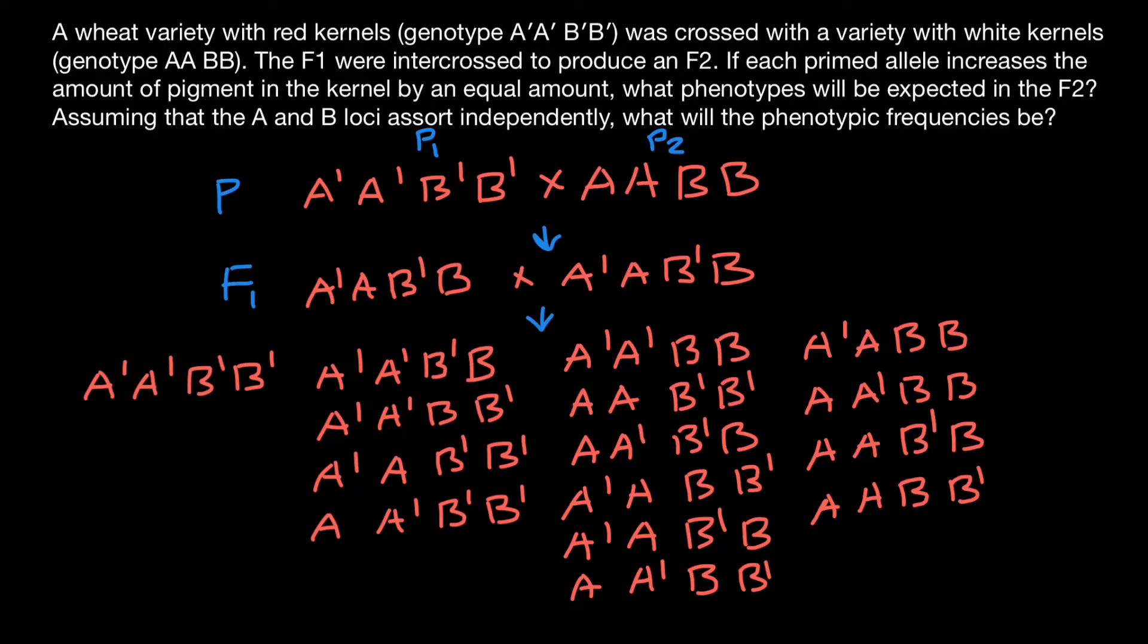And the last combination would be, and the only one, where all four alleles are not going to be primed. So AABB. Let's now find how many combinations we have. One, two, three, four, five, six, seven, eight, nine, ten, eleven, twelve, thirteen, fourteen, fifteen, sixteen. Total number of combinations are 16.